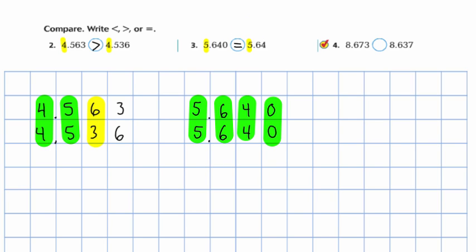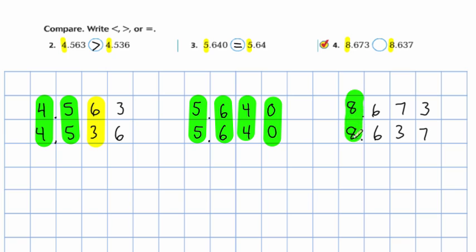Moving on to the last problem in this section: 8.673 and 8.637. Highlighting the ones place and then stacking them up — 8.673, then 8.637. Once you have them all stacked up, we can compare them. The ones place is the same, tenths place is the same, hundredths place — not the same. Seven hundredths is greater than three hundredths, so 8.673 is greater than 8.637.